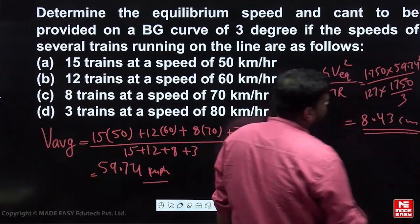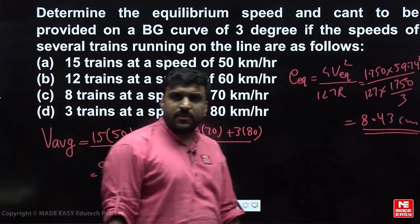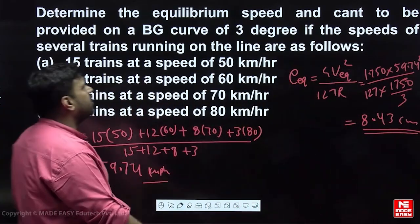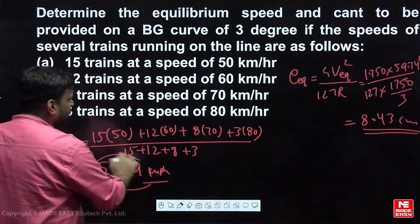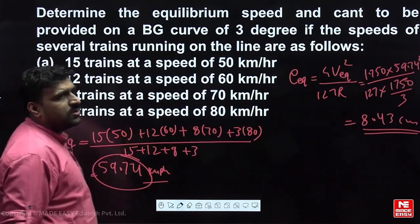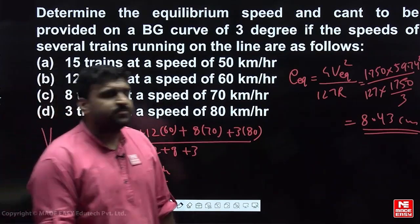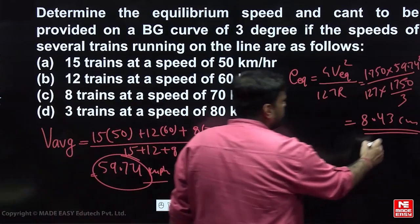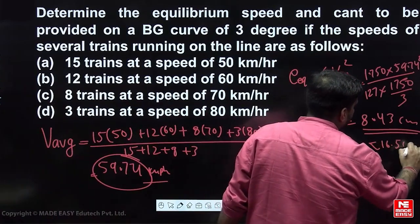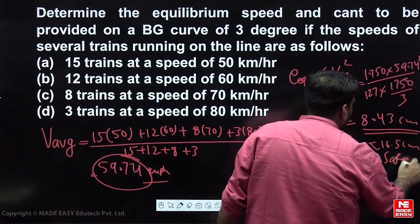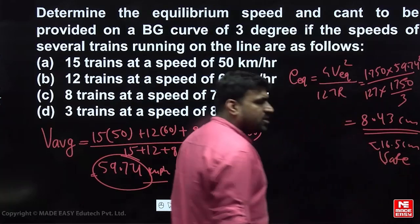The equilibrium super-elevation is 8.43 cm. This is less than the maximum allowed value of 16.5 cm, so it is definitely safe.